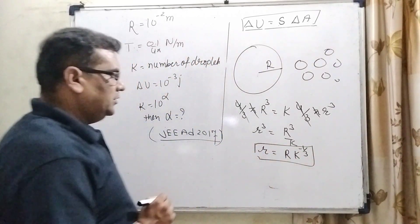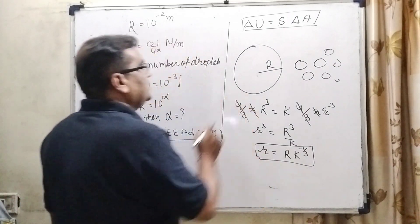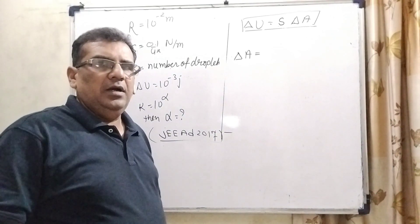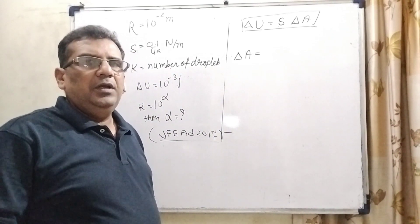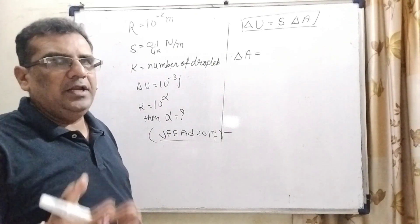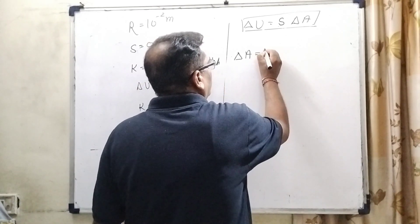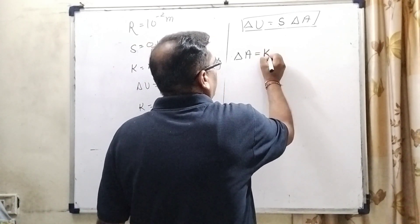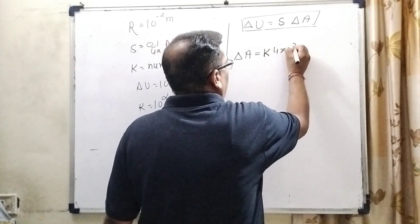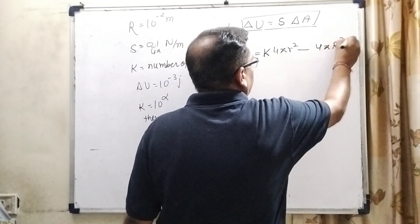So here, we have to find out the relation between small r and capital R. Then what is the change in area? Now find out the change in area. As you know that big drop splitting in k identical droplets means area is increased.